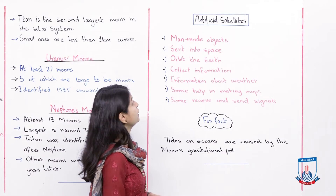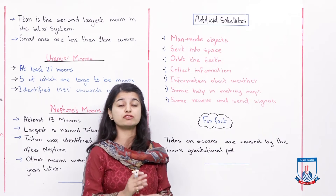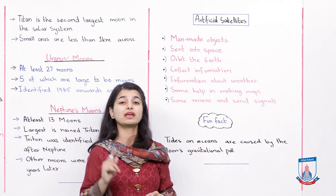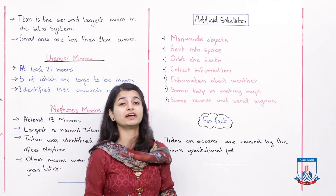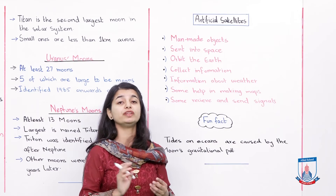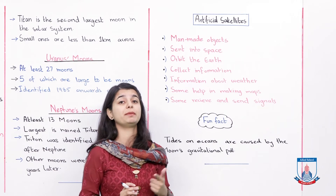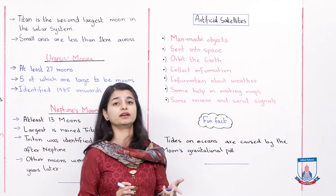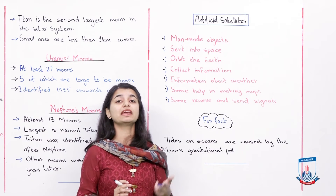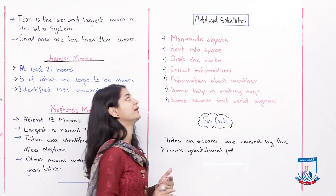Artificial satellites are sent into space. Khud insaan ne inko create kiya aur unko space mein bheja hai. They orbit the Earth. Moon mein kya common hai? Common ye hai ki moon bhi Earth ko orbit kar raha hai aur satellites bhi Earth ko hi orbit kar rahi hain.